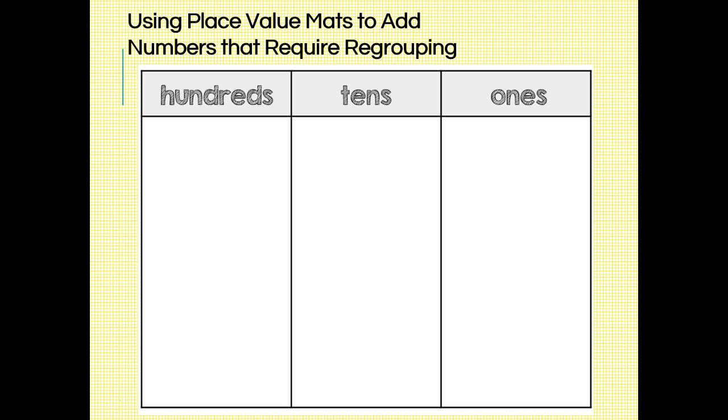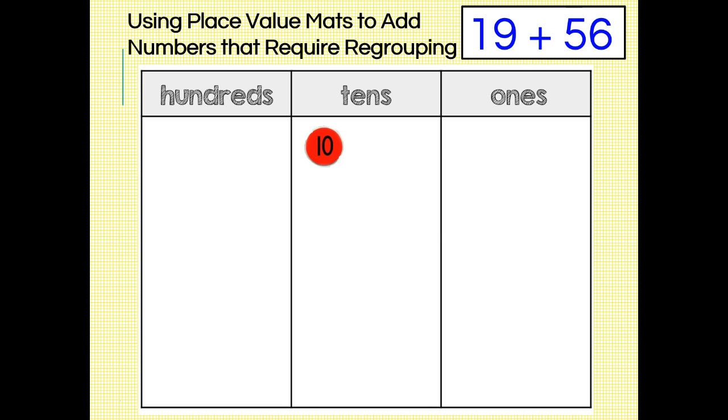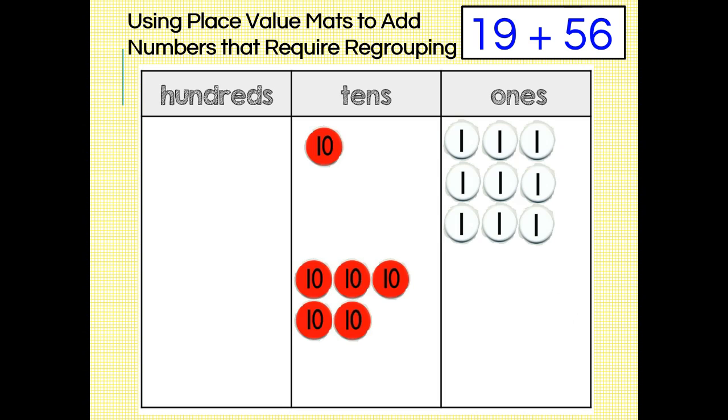Our next problem is 19 plus 56. Again, we'll start by laying down place value disks to represent our addends. How many tens and ones disks do we need for 19? What about 56? Can you see what we need to do next?